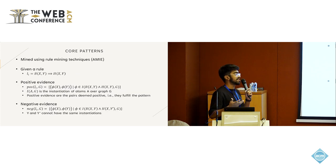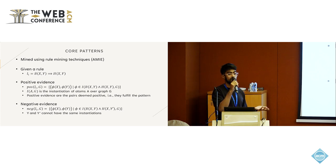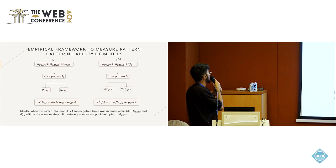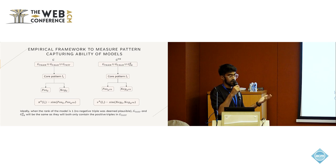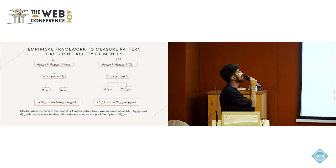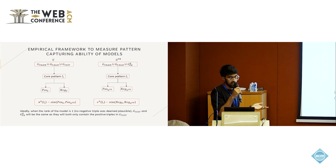Secondly, we mine core patterns from the original graph using a rule-mining technique called ZAMI. For a given rule, we consider two important quantities: positive evidence (true positives) and negative evidence (false positives). In the framework, we construct two separate graphs: the original graph containing train, validation, and test splits, and a predictions graph combining train, validation, and predictions. Given core patterns, we measure positive and negative evidence for both G and G_PR, then compute similarity between these evidences.